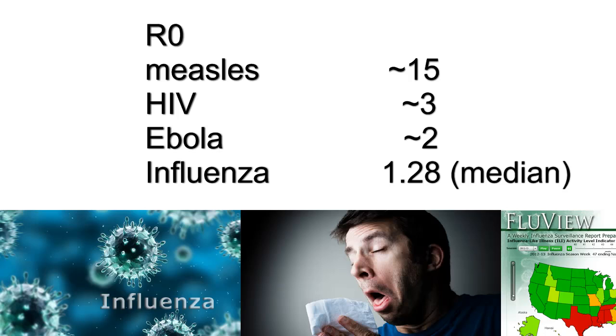The highly infectious 1918 pandemic strain had an R₀ of 2.9. But the median over recorded history is about 1.28,